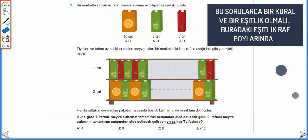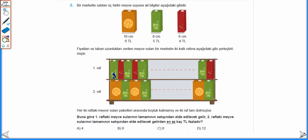Bu sorularda bir kural bulmamız gerekiyor. Birinci raftaki meyve sularına baktığımızda 8 cm'lik meyve suyu, 6 cm'lik meyve suyu sırayla devam ediyor. İki tane meyve suyunun toplam uzunluğu 14 olarak devam ettiği için bu rafın uzunluğu 14'ün bir katıdır deriz.